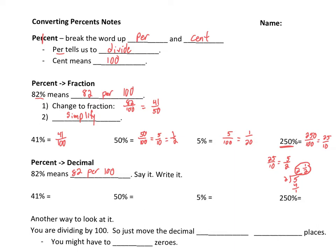So we can say it. When we say it, that becomes 82 hundredths. And then we just have to write it. 82 hundredths is 0.82. Because the 2 is in the hundredths place. Right? 41% is 41 hundredths. 0.41. 50% is 50 hundredths. 0.50.